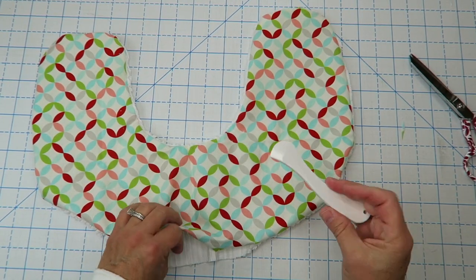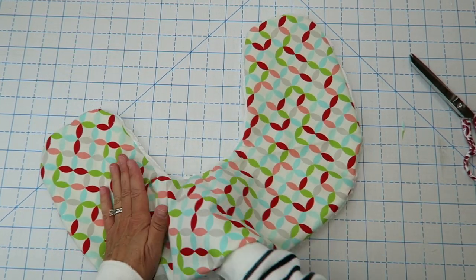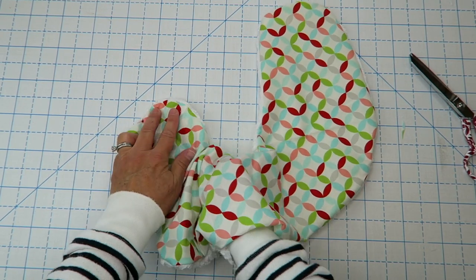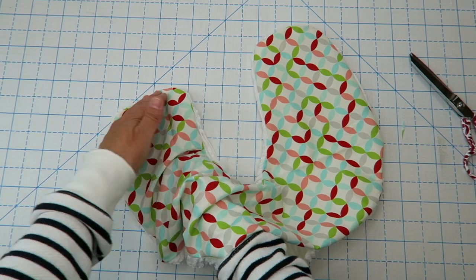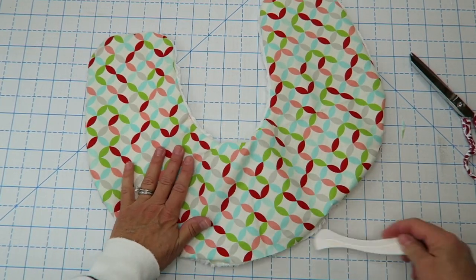Our next job here is just to carefully turn this right side out. If you backstitched at your stop and start points you shouldn't have any problem with this. If you want you can use this little Clover turning marker, it has this nice little point on it. You can use that to push them out too, but I think for this project your fingers probably will do the trick.